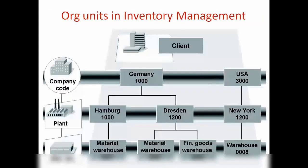On the top we have client, and under client we have different company codes. Under company code we have different plants. So under a company code we can create different plants and assign those plants to that company code. Under plant we have storage location, which is the location where we are putting the stock.